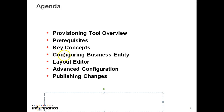The root node is the uppermost node of the business entity model and represents the business. The features available in the provisioning tool include: configuring your business entity, a layout editor tab through which you can edit your 360 view, and an advanced configuration tab which is an XML editor where you can directly change different kinds of XML.